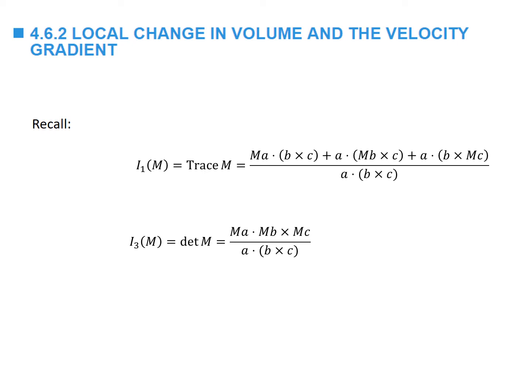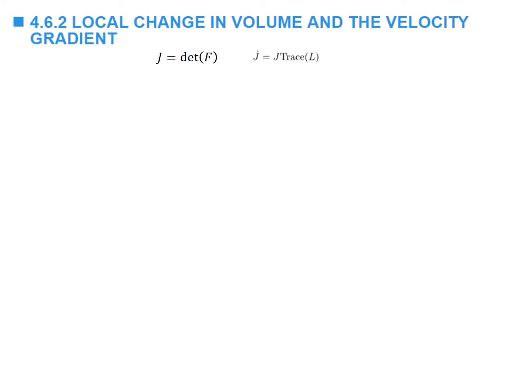First, we recall two important relationships studied earlier: the first and third invariants of a matrix M, written in terms of three arbitrary linearly independent vectors. The trace of M, or I₁(M), has one form, and I₃(M) — the third invariant, or determinant of M — has another. Denoting J as the determinant of F, a very important relationship in continuum mechanics is the rate of change of volume: J̇ is equal to J multiplied by the trace of the velocity gradient L, where L = Ḟ F⁻¹.